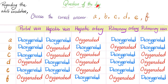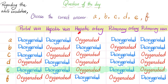Let's answer the question from the previous video on adult circulation. The answer is E. The portal vein carries deoxygenated blood. The hepatic vein also carries deoxygenated blood. The hepatic artery carries oxygenated blood. The pulmonary artery is an exception — it is an artery that carries deoxygenated blood. The pulmonary vein is also an exception — it is a vein that carries oxygenated blood.